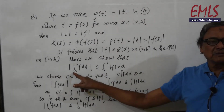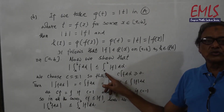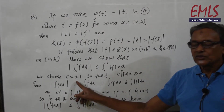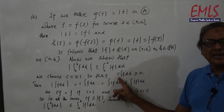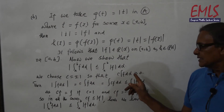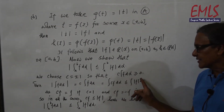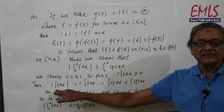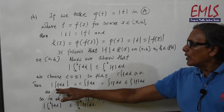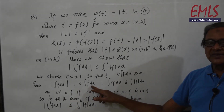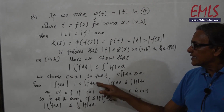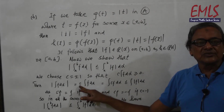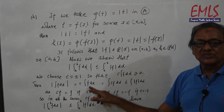Now we show that |∫_a^b f dα| ≤ ∫_a^b |f| dα. We choose c = ±1 so that c·∫f dα ≥ 0, i.e., c·∫f dα is non-negative. If the integral is negative we take c = −1 to make it positive; if it is already positive we take c = +1. So in either case, |∫f dα| = c·∫f dα.